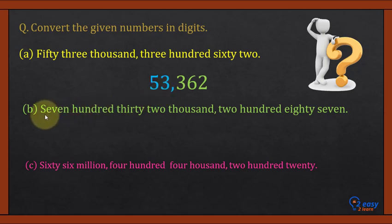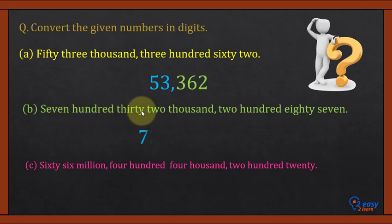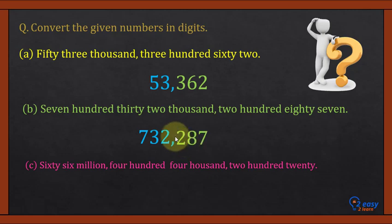Let's see part B. Seven hundred thirty-two thousand — this is the thousands group. Two hundred eighty — this is the hundreds group. We will write the thousands group first: seven hundred thirty-two. Then the hundreds group: two hundred eighty. So this number is written in digit form as 732,280.